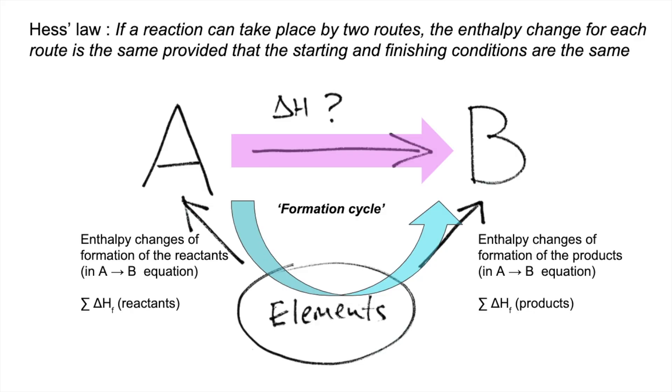So the formula we're going to use looks like this: that unknown enthalpy change is equal to the sum of the enthalpy changes of formation of the products, that arrow is going in the correct direction, minus the sum of the enthalpy changes of formation of the reactants. That's because that arrow is going in the wrong direction.